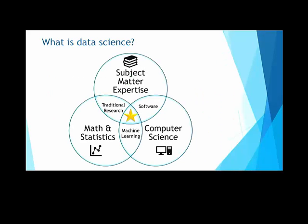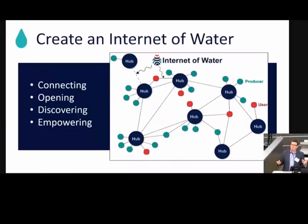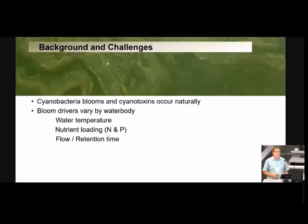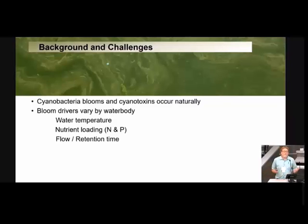Data scientists in the data science community are often referred to as unicorns. We're going to create an Internet of Water, which is a network of producers — data producers, data hubs, and data users.